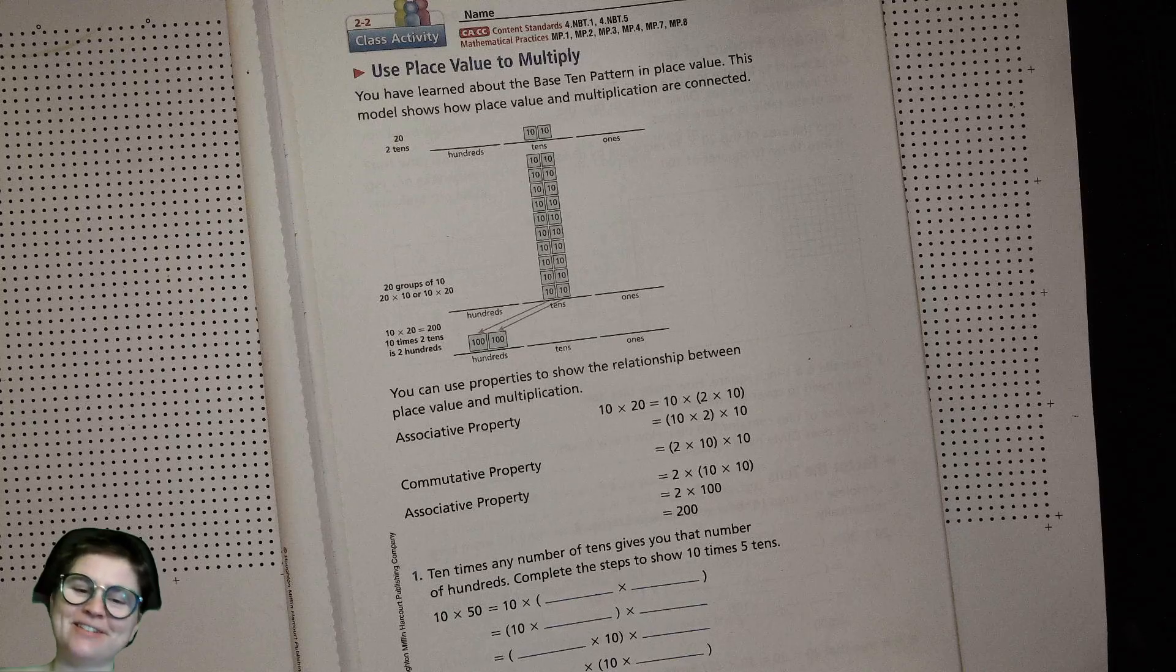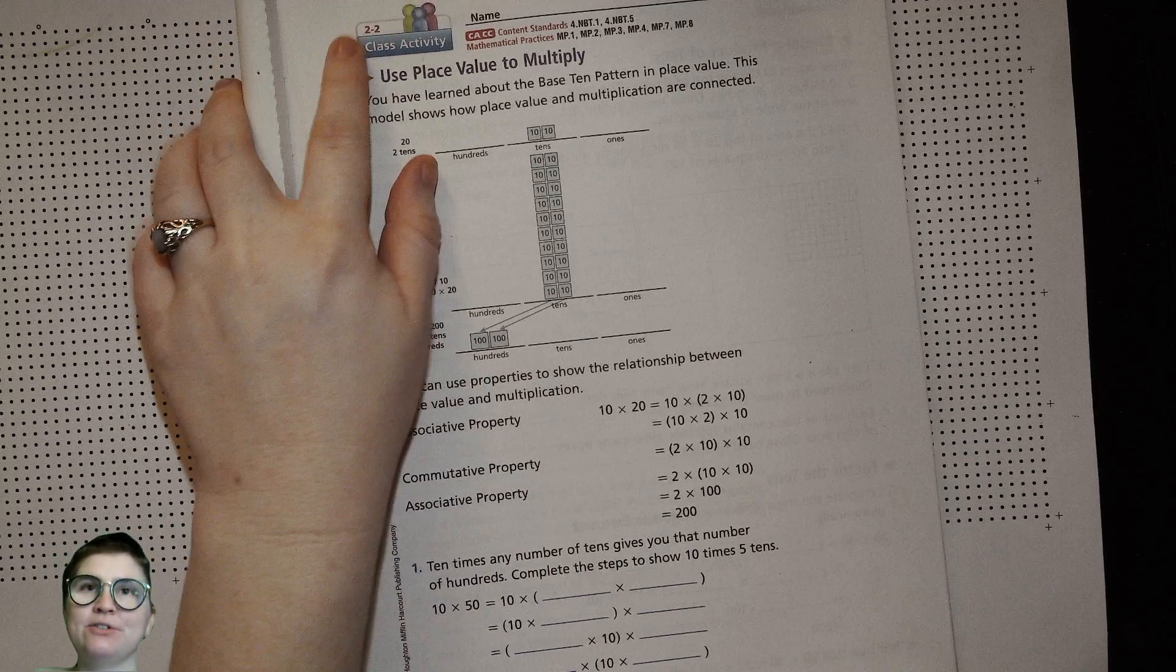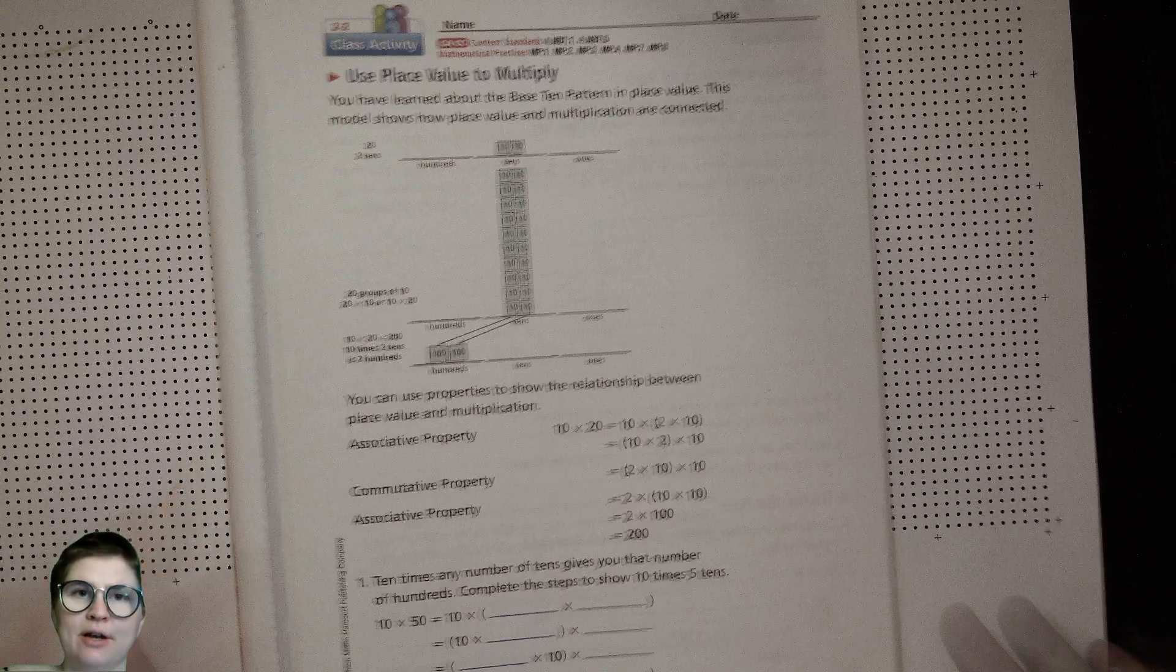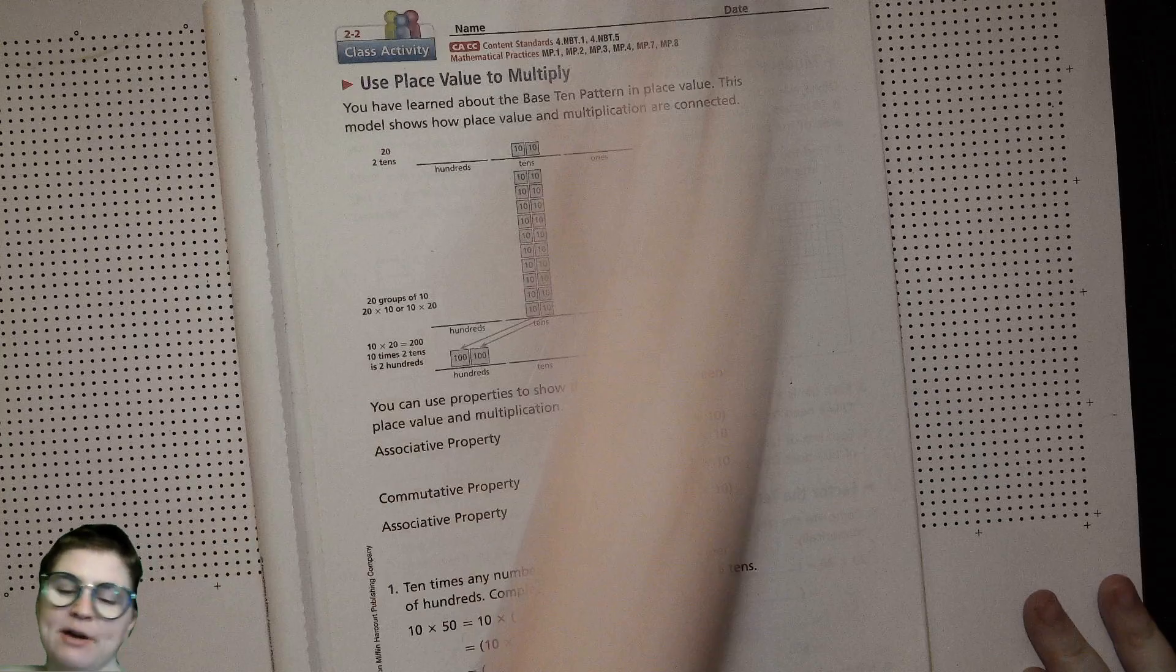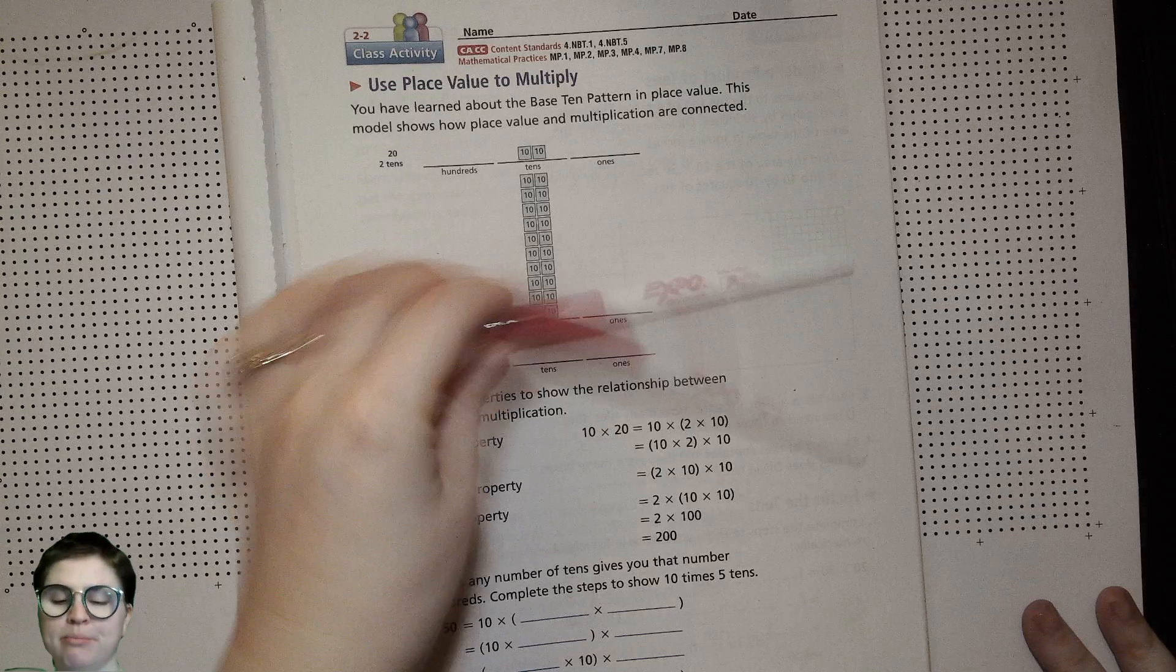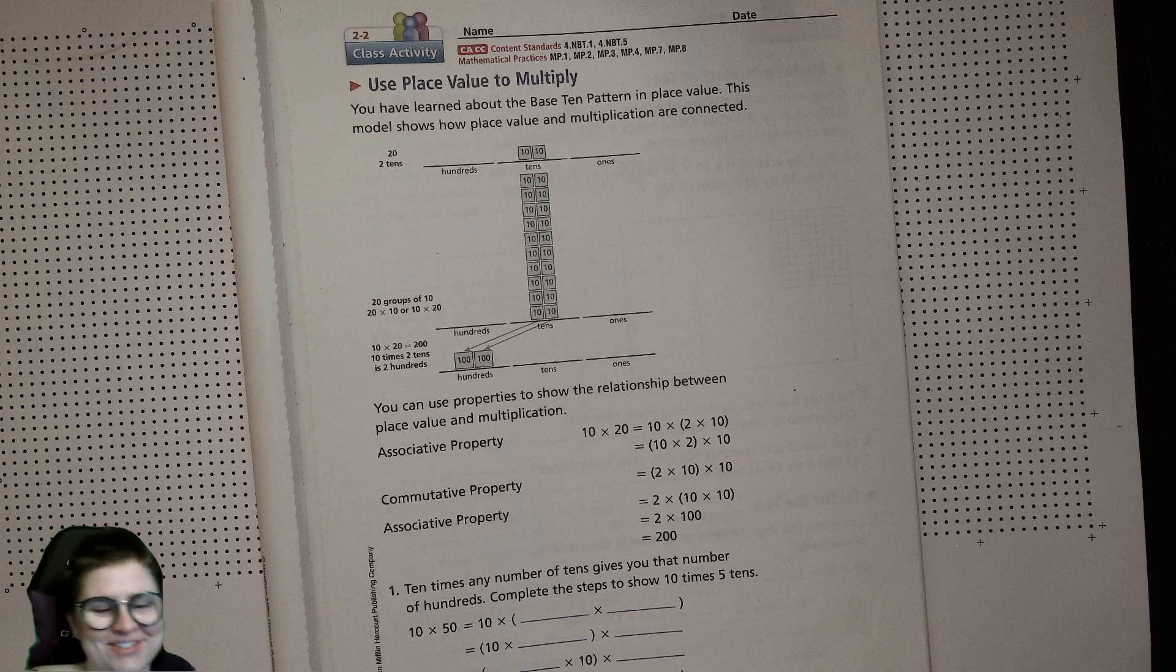Hey there fourth graders, this is Mrs. Smith. Today we are doing unit 2 lesson 2, which is on page 47 of your math book. You will need your math board for this, so go ahead and make sure you have that. If you have a skinny whiteboard marker, those work best, but you gotta do what you gotta do and use what you have.